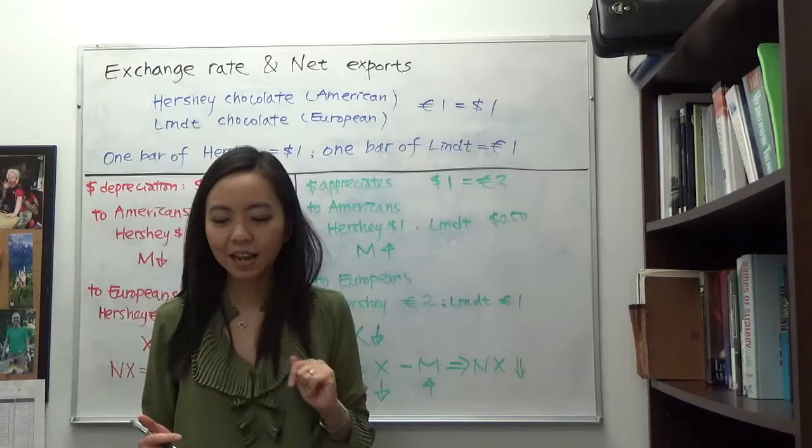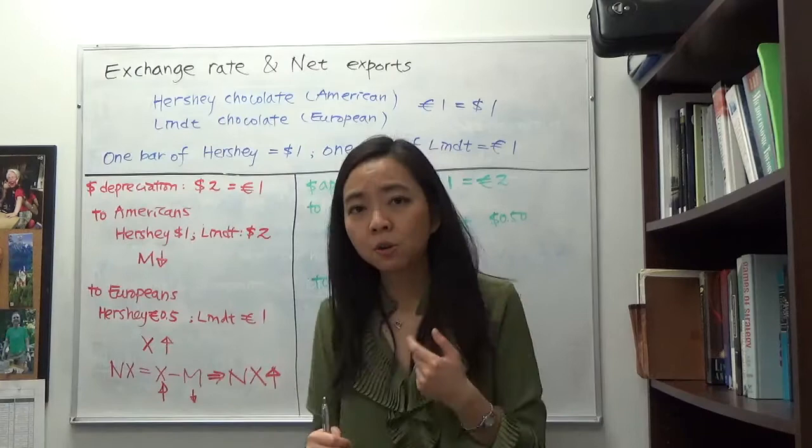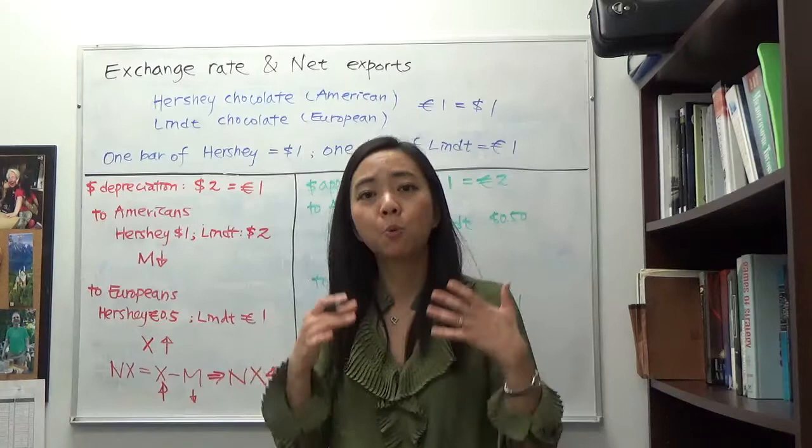Now I'm going to start to change the exchange rate. Suppose the dollar depreciates, and therefore two dollars can get you one euro. When the dollar depreciates, that means the dollar becomes relatively worthless, and therefore you need to pay more dollars in order to get one euro.